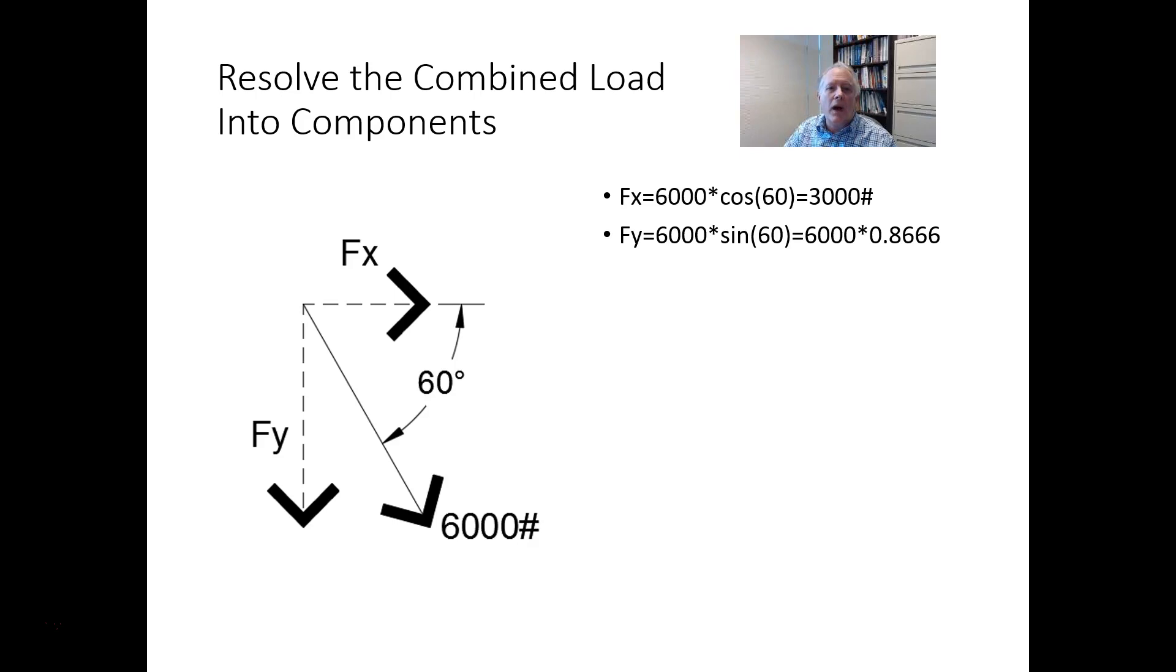Now, in the y component, it's 6,000 times the sine of 60. In this case, I didn't bother with a sign for the angle, but if I had used negative 60 for the sine, then I would have gotten a negative result. Here, this is just the quantity, but recognize that Fy acts down, and so if you want to separately tabulate it, make sure that you either draw an arrow down or put a negative sign.